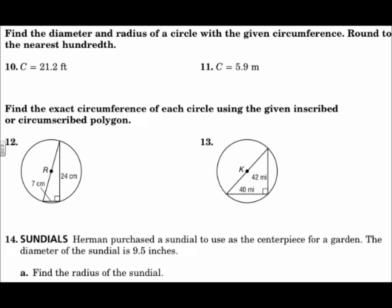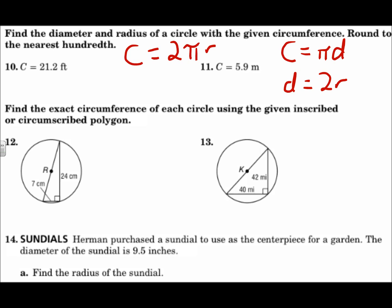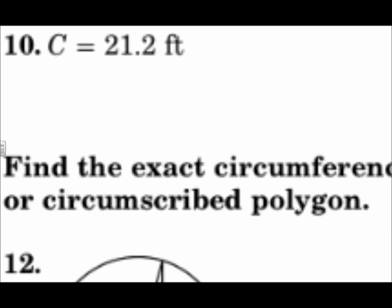To find the diameter and radius of a circle with a given circumference, rounded to the nearest hundredth, we use the formula C = 2πr, where the circumference equals two times pi times the radius. We can also use C = πD to solve for the diameter directly, and then use D = 2r to find the radius.